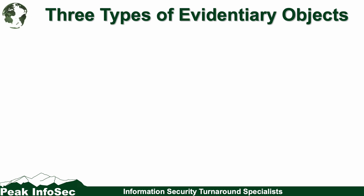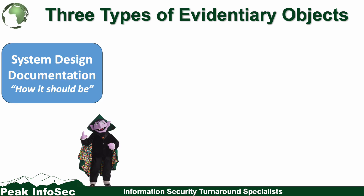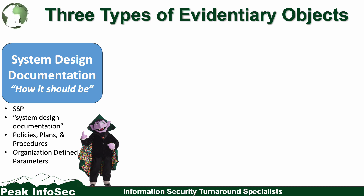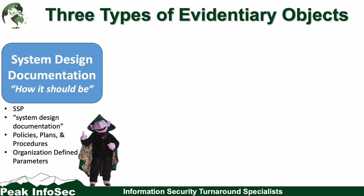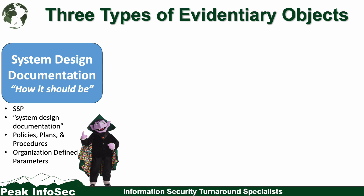Let's jump into the three types of evidentiary objects. First, from the Count: system design documentation. This is meant to tell me, as an assessor, how it should be — how should your environment be set up? This shows up in the system security plan, and it could also show up in policies, plans, and procedures. This often comes out of organization-defined parameters. Under NIST 800-171A, REV-2 has a whole bunch of implicit ODPs, but REV-3 now shows both explicit and implicit ODPs that you're going to have to fulfill and document how you've done them.